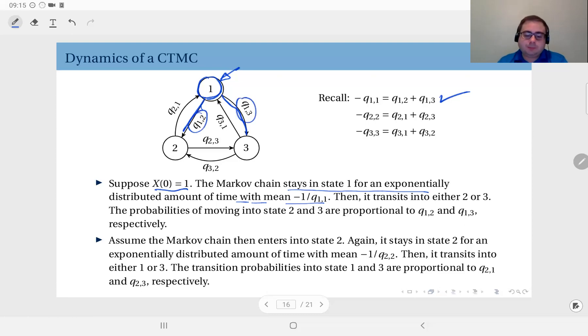So the probability that upon exiting state 1, the Markov chain goes to 2 is equal to Q 1 2 divided by Q 1 2 plus Q 1 3. And upon exiting state 1, the probability that it goes to 3 is equal to Q 1 3 divided by Q 1 2 plus Q 1 3. So let me just give you some numerical examples.